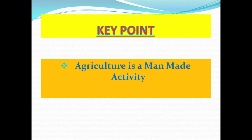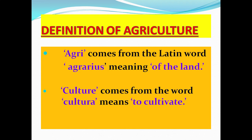The word 'agriculture' is broken into two parts. The part 'agri' comes from the Latin word 'agrarius,' meaning 'of the land.' The term 'culture' comes from the Latin word meaning 'to cultivate.' So the word agriculture was defined by the Greeks a long time ago.